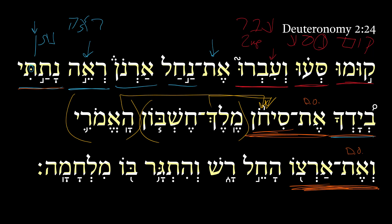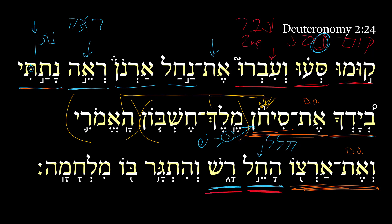Then we get a slew of imperatives: 'begin, possess.' Here we have the hifil imperative, the 2ms of the root halal — which oftentimes means 'to profane' but can also mean 'to begin,' and here that's what it is. Then the qal imperative 2ms of the root yarash — notice the yod functions similarly to a nun and it flees in the imperative. Yarash is often taken as an infinitive, giving 'begin to possess' — the Vulgate and Septuagint both use infinitives there. Then we get 'and contend' or 'and stir up strife': the hithpa'el imperative of the root garah — stir up strife with him, in battle.